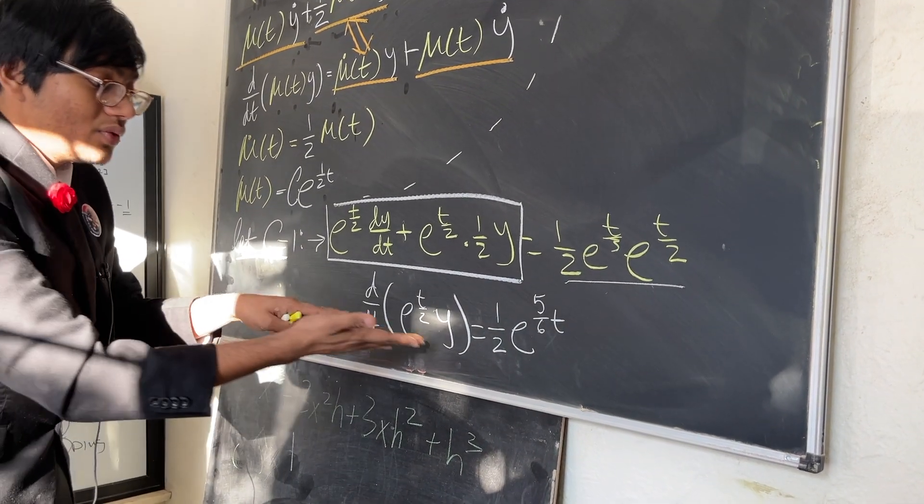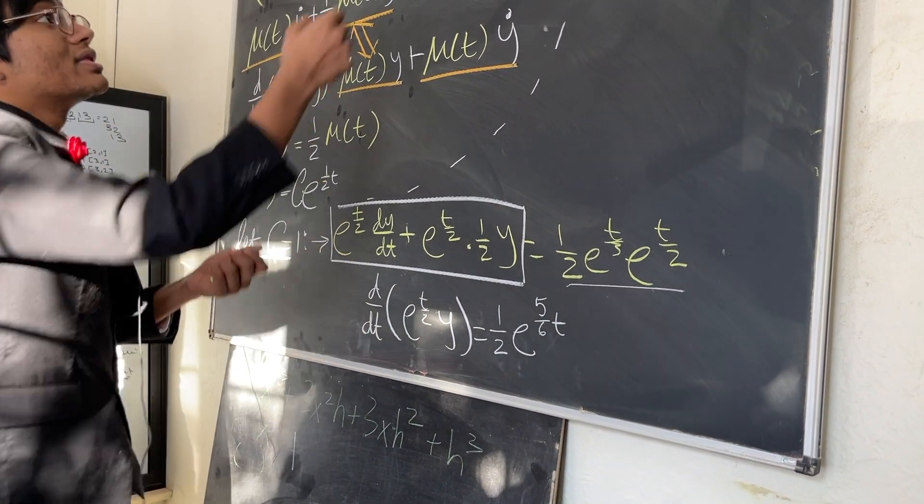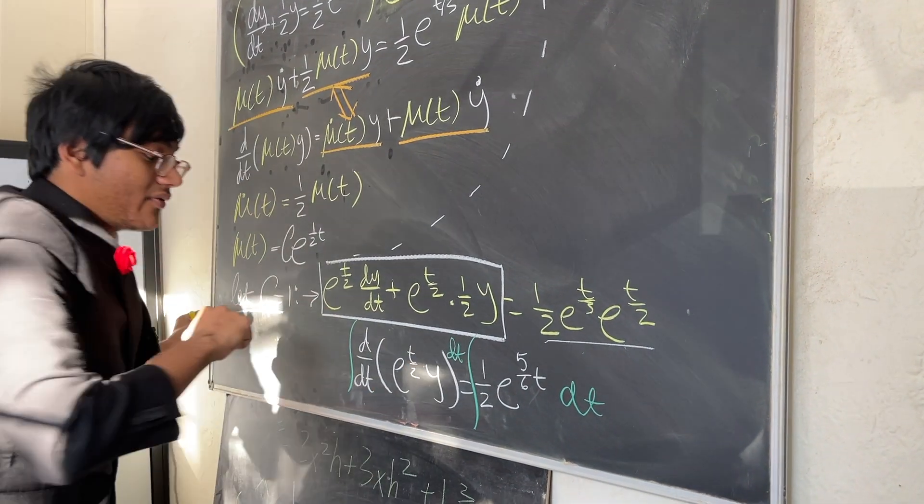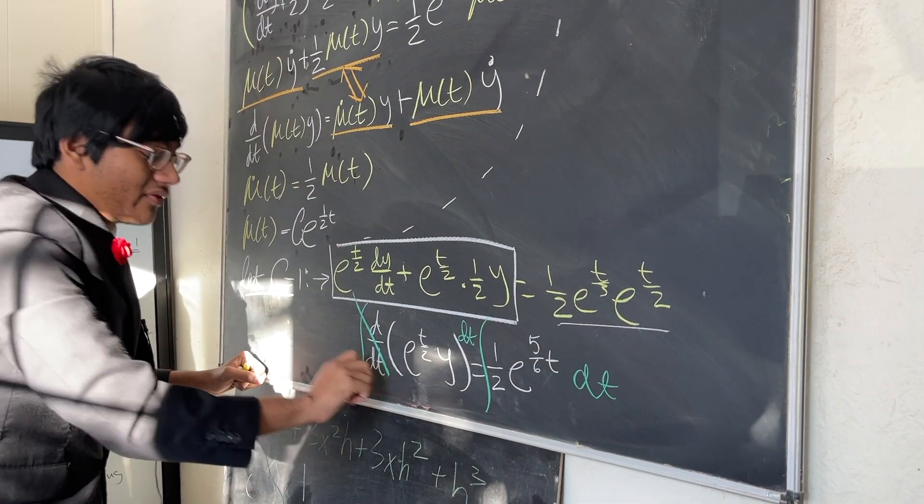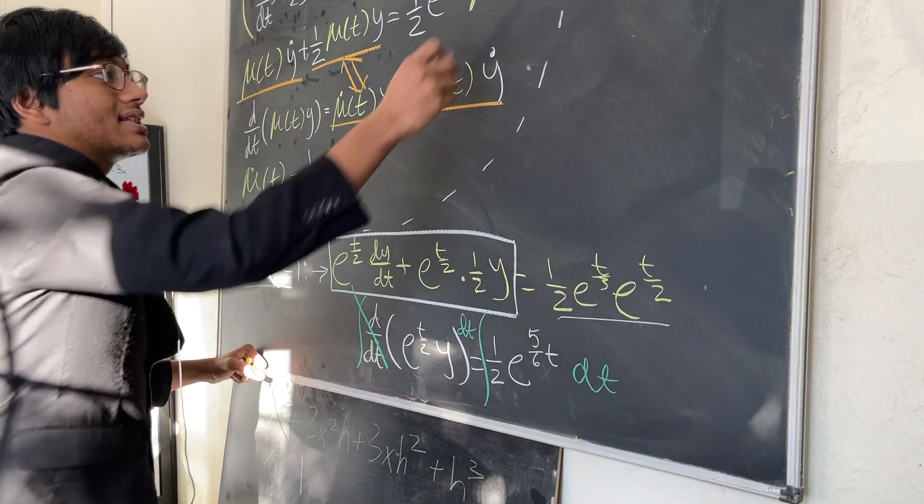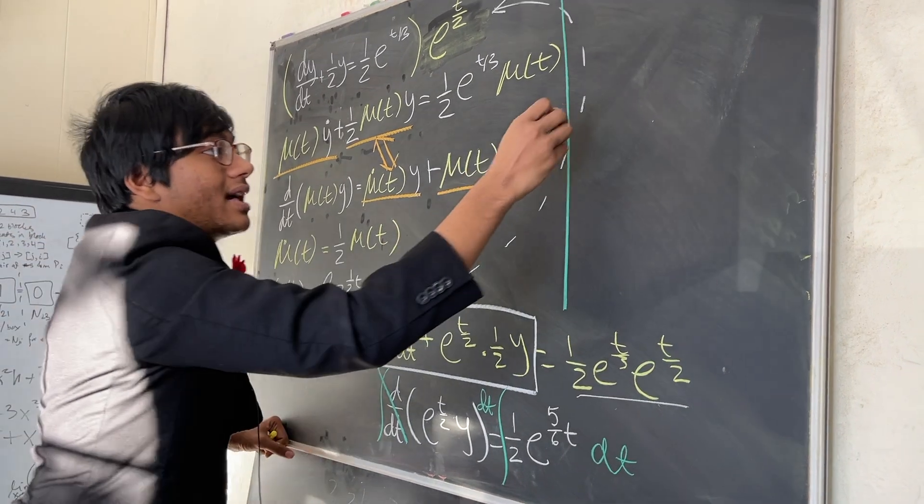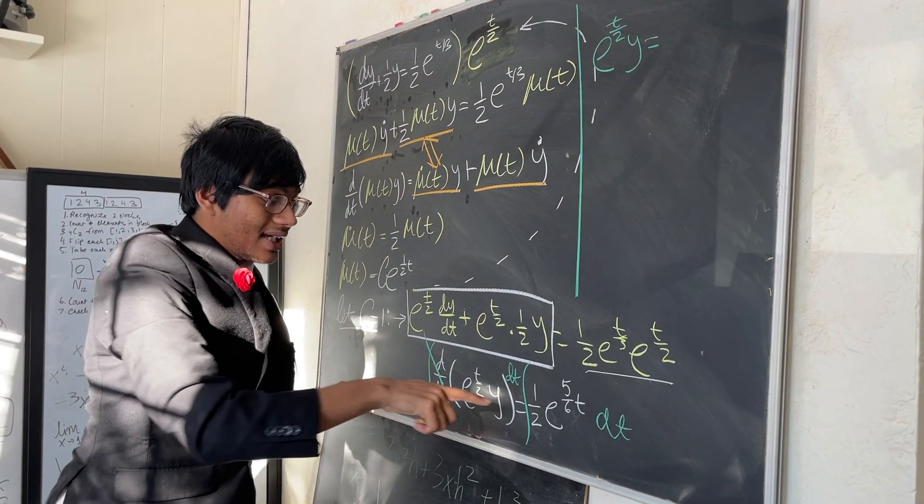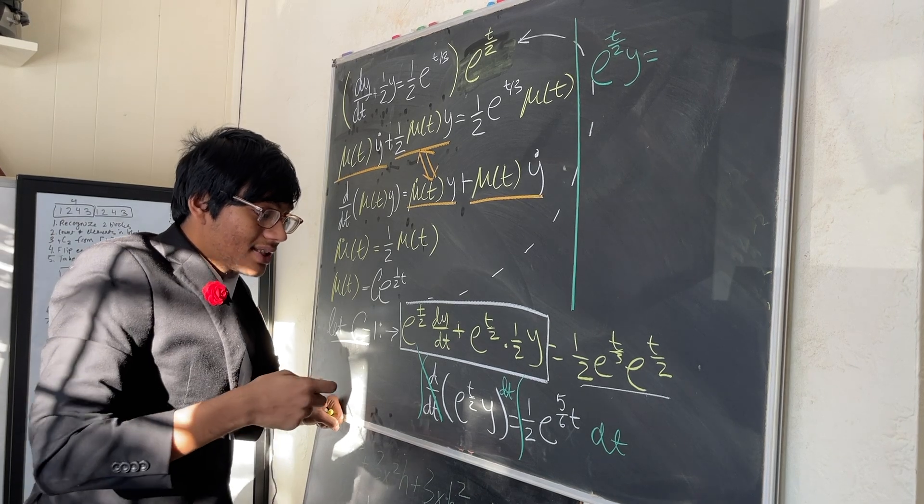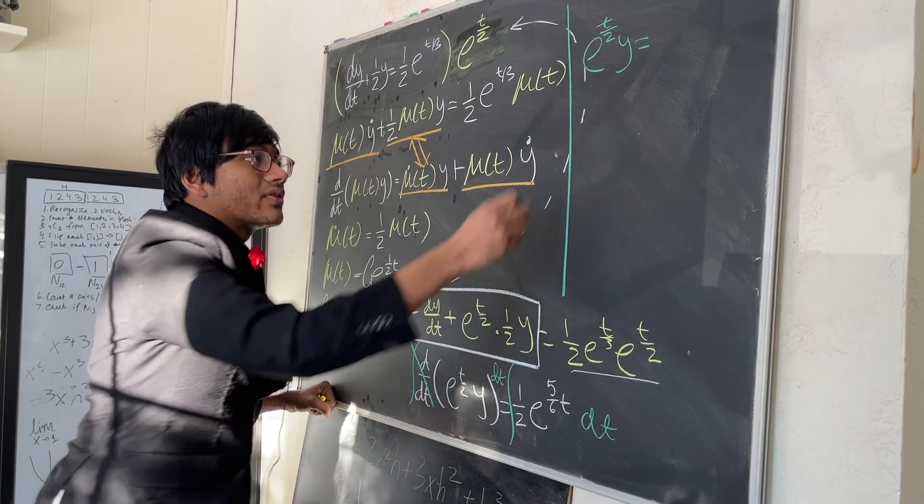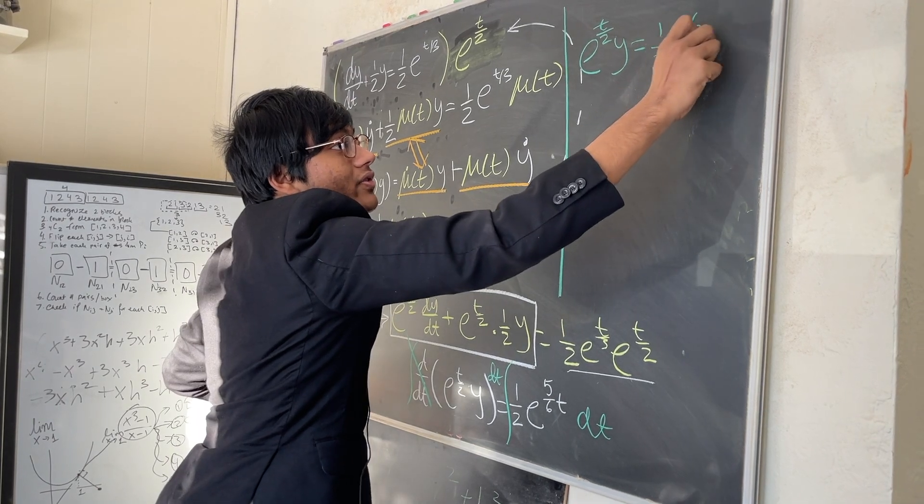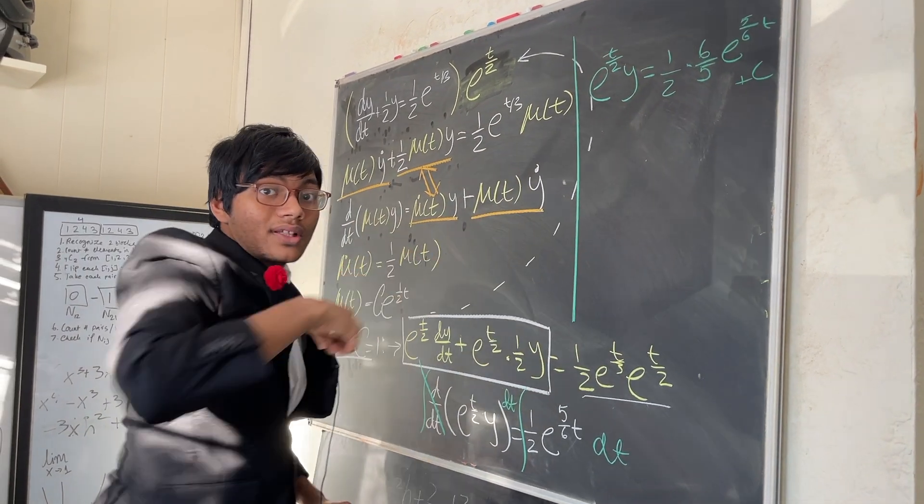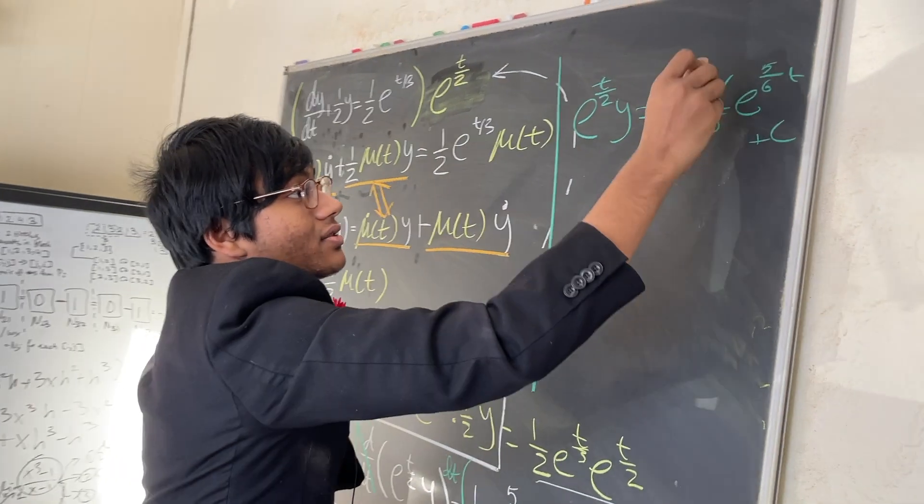Now we're almost done. What do we have to do? We have to isolate y, right? To isolate y, just integrate both sides. Just integrate both sides with respect to t. And so if I integrate both sides with respect to t, well, the integral of a derivative just cancels out. And so on the left hand side, let's write our work here. On the left hand side I'm going to have e to the t over 2y is equal to, and on the right hand side I have the integral of an exponential, so that sounds very easy. I'm going to have half, 6 over 5, so I'm going to have half times 6 over 5 times e to the 5 over 6t, and don't forget your plus c because there's an entire family of functions that satisfy that integral.